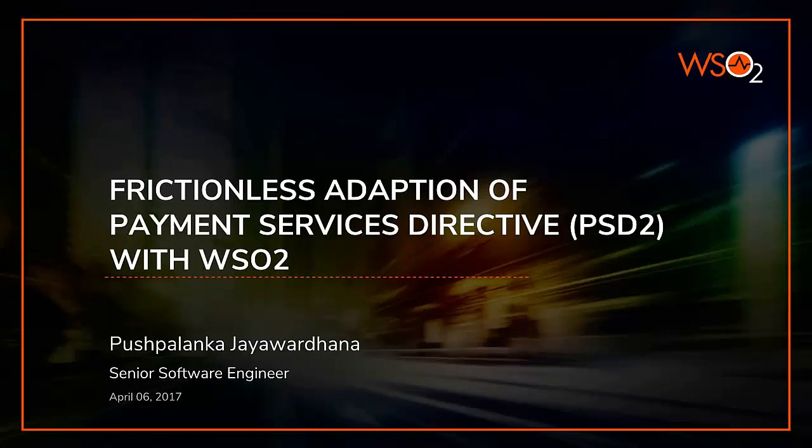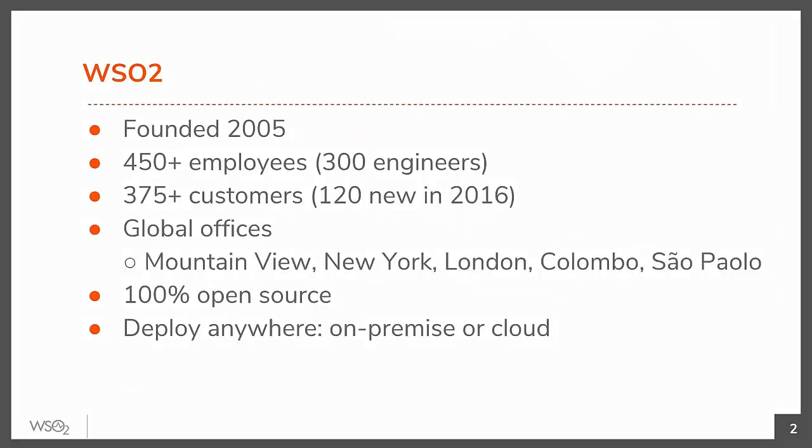Let's start with what WSO2 is, if you haven't worked with WSO2 yet. WSO2 is a company founded in 2015 and we have nearly 500 employees and nearly 300 engineers working on different enterprise solutions. We have nearly 400 customers and global offices in the United States, United Kingdom, and Sri Lanka. We are a 100% open source company — all our source is publicly available on GitHub and our products are deployable on-premise and on cloud to cater for enterprise solutions.